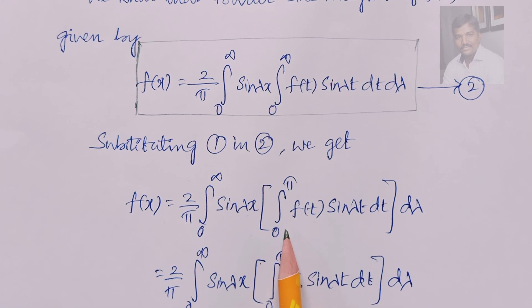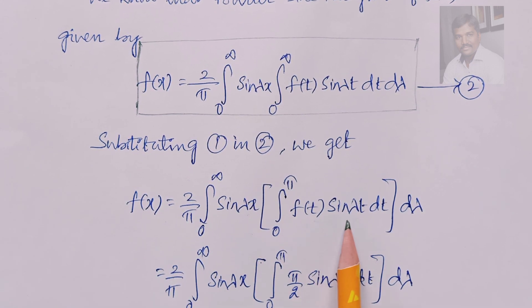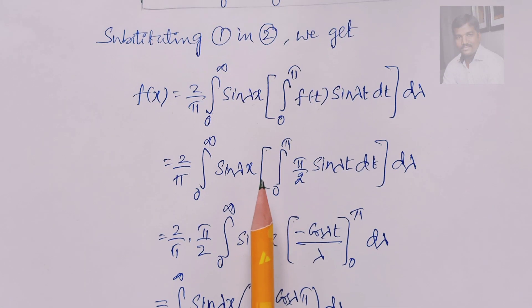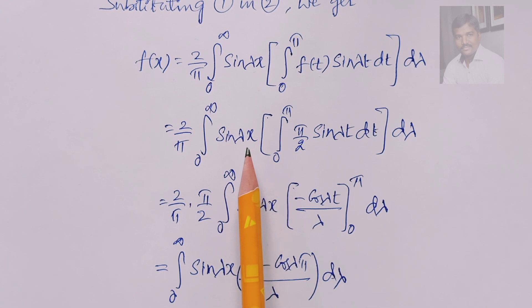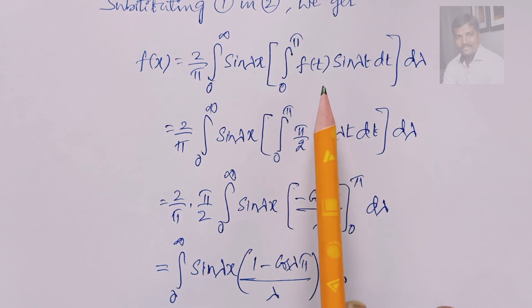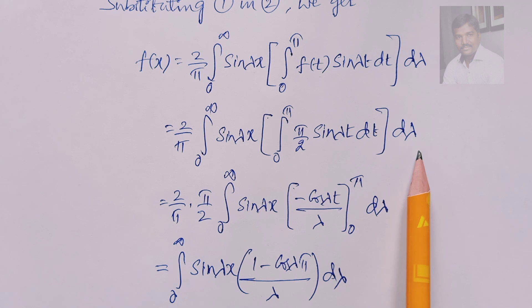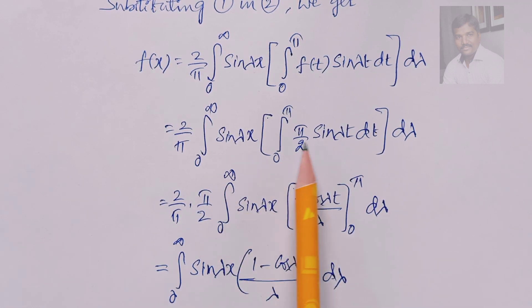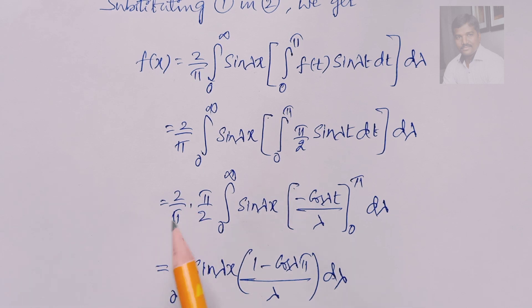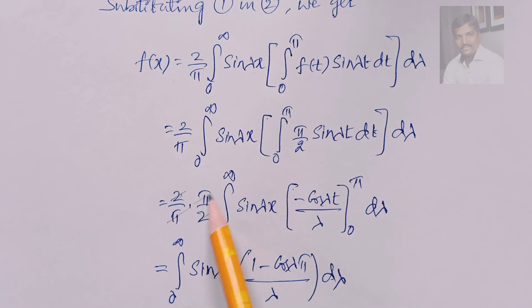Now, for the interval 0 to π, f(t) equals π/2, so we have (2/π) times the integral from 0 to infinity of sin(λx) times the integral from 0 to π of (π/2) sin(λt) dt dλ. Taking π/2 out as a constant, the factors of 2 and π cancel.